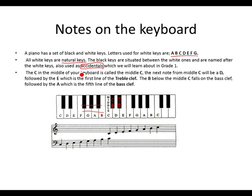The C in the middle of your keyboard is called the middle C. The next note from the middle C will be a D. The middle C is located on the ledger line of the staff, below the staff. The ledger lines are lines and spaces below or above the staff. E is on the first line of the staff, F on the first space, G on the second line of the staff — the treble clef. A on the space, B on the line, C on the space. Notes above the middle C fall under the treble clef, and notes below the middle C fall on the bass clef.